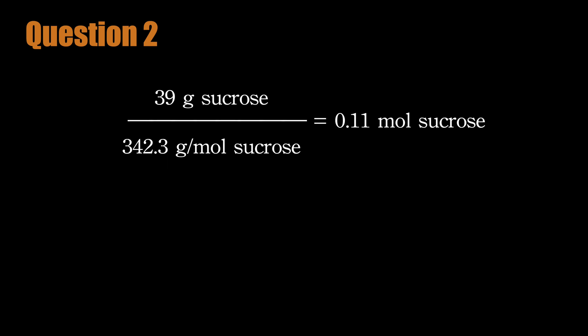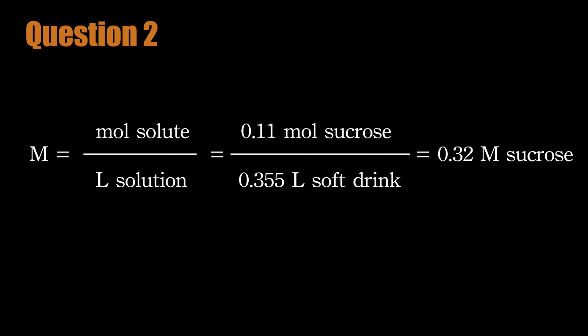We know the mass of the sucrose, the molar mass of the sucrose, and the volume of the soft drink. First, convert the mass of sucrose to the number of moles. Then, convert the volume of the soft drink from milliliters to liters. The molarity of sucrose in this beverage is 0.32 molar.